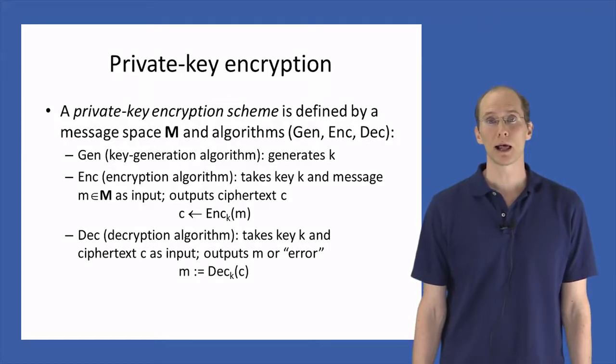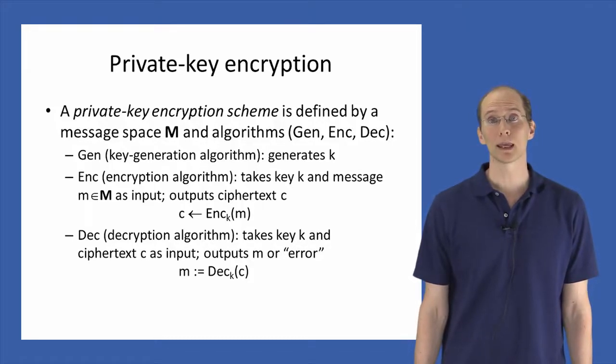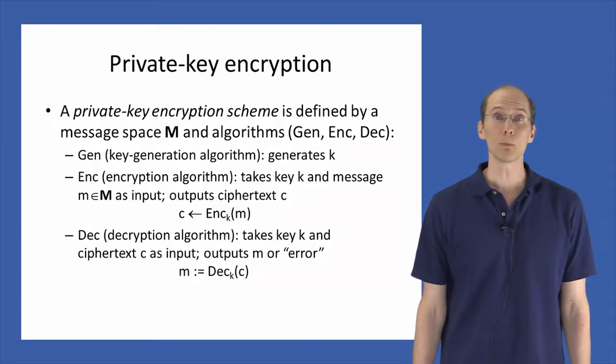The key generation algorithm is a randomized algorithm that chooses a key K. The encryption algorithm takes two inputs, a key K and a message M in the message space. It outputs a ciphertext C. Finally, the decryption algorithm takes as input a key K and a ciphertext C. It outputs a message M or possibly some error.